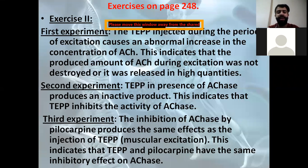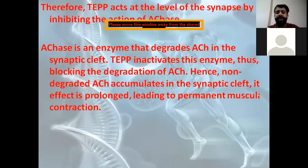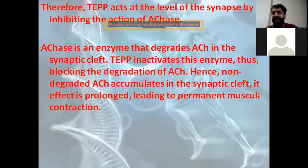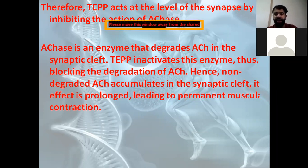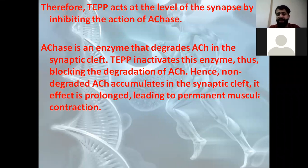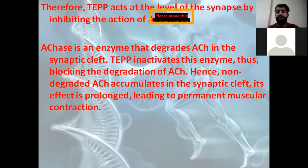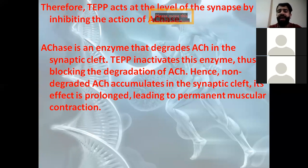Acetylcholinesterase is the enzyme that degrades acetylcholine in the synaptic cleft. TEPP inactivates this enzyme, thus blocking the degradation of acetylcholine. So TEPP prevents the degradation of acetylcholine by acetylcholinesterase. Non-degraded acetylcholine accumulates in the synaptic cleft, so more acetylcholine means more excitation and more contraction of the muscle. TEPP acts at the synapse by inhibiting acetylcholinesterase.